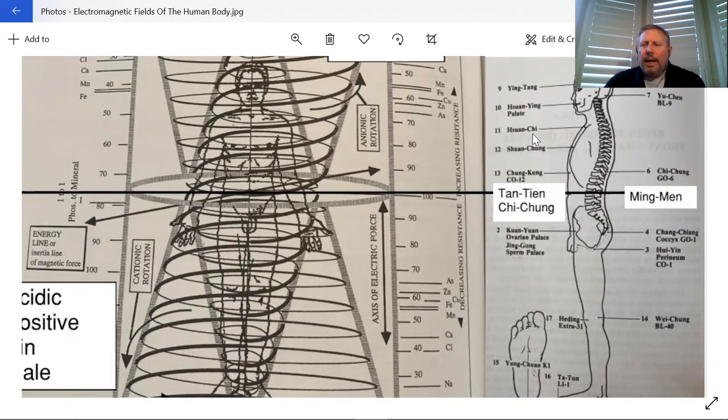As it runs through the middle of this diagram, we see we have the Tantian Chi Chung point, which is right here at the navel, where creation begins in the human. This is where we're connected by the umbilical cord. It aligns with this midpoint, the balance between the positive and negative, the male and the female. That same point corresponds within the spine, which is called the Ming-Men.